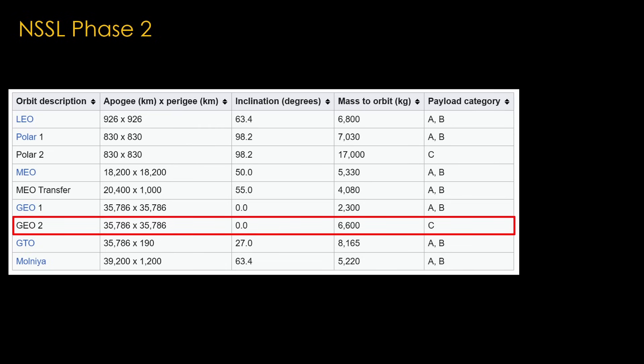The GEO orbit requires putting 6600 kilograms of payload all the way into geosynchronous orbit, and the Falcon 9 can only do about 3000 kilograms. If you can't do that, you can't bid on this contract, and therefore you can't fly any of these payloads.